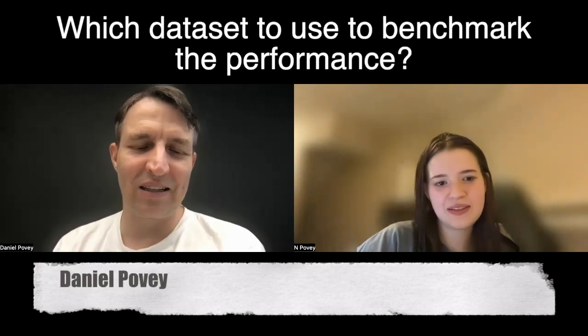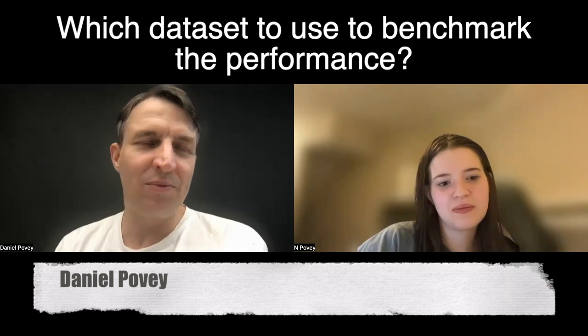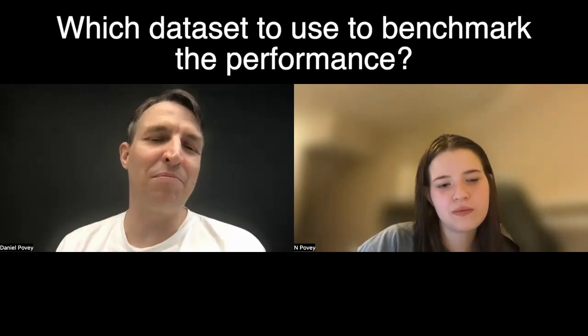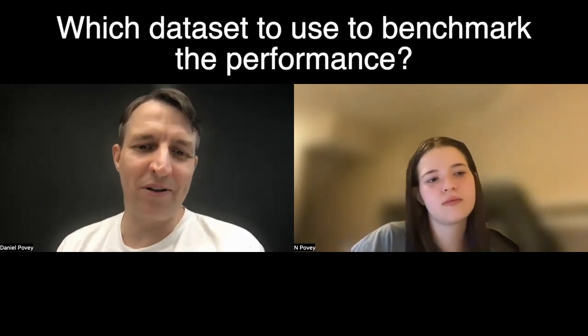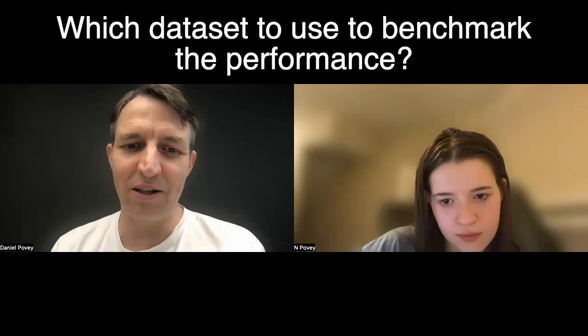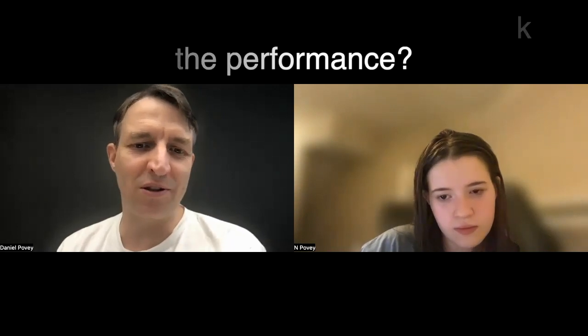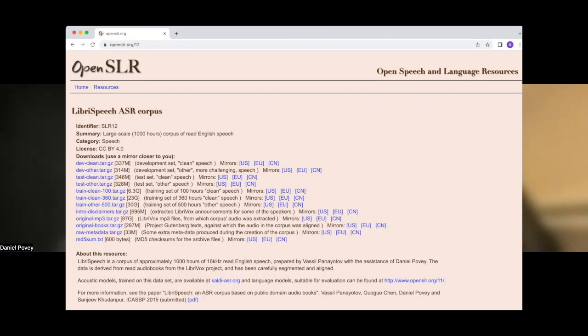Which data set would you use to benchmark performance? Well, I'd probably use LibriSpeech. LibriSpeech is something that tons of people publish on, so it's always easy to look up what the baseline result is. Certainly in Kaldi, LibriSpeech is the most convenient baseline to use, but people use it in many other toolkits as well.